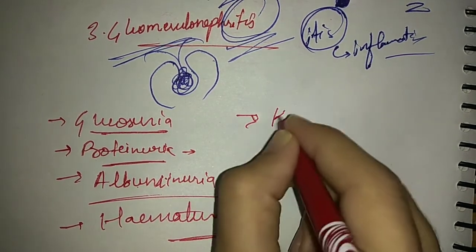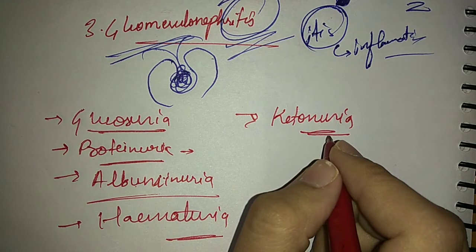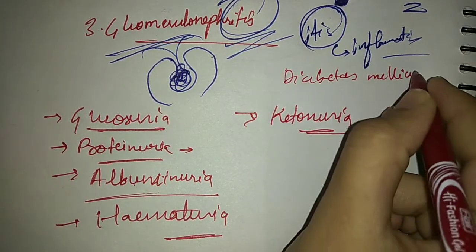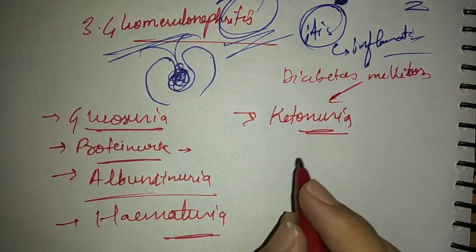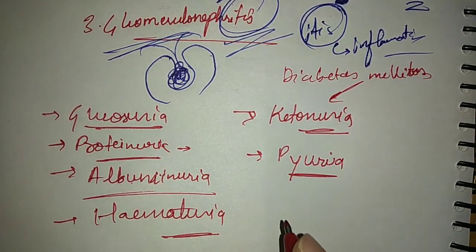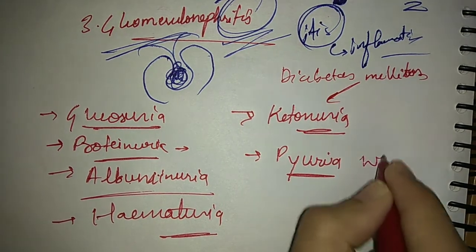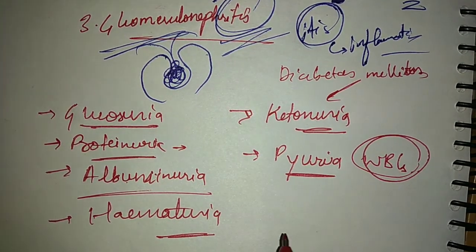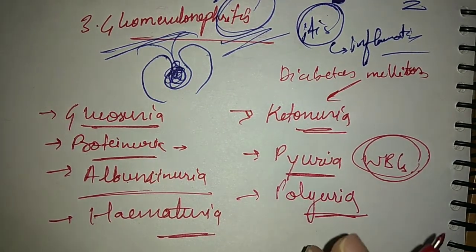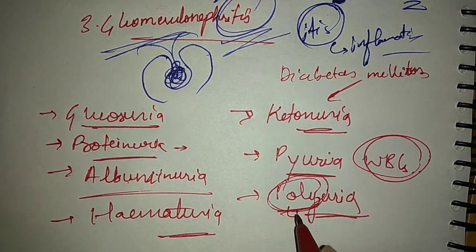Then ketonuria, which is the presence of ketone bodies in the urine, mainly happens in diabetes mellitus patients. Then pyuria, which is the presence of pus cells in the urine. Pus cells or WBCs, the white blood cells are pus cells. Their presence in urine is pyuria. Then polyuria means release of excessive amount of urine, frequent urination.